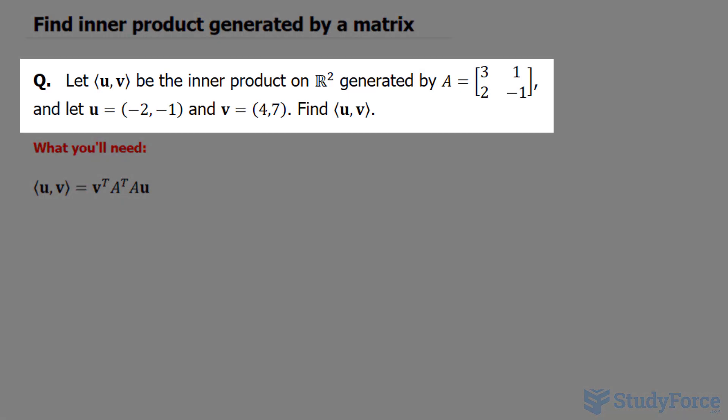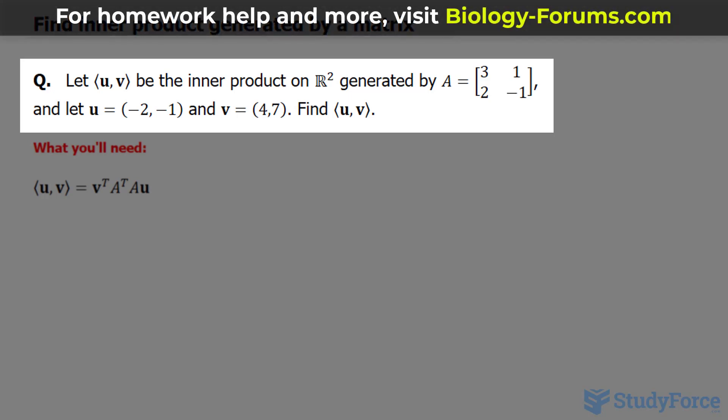Let uv be the inner product on R2 generated by this matrix—it's a two by two matrix—and let u have these two components and v have these two components. Find the inner product.